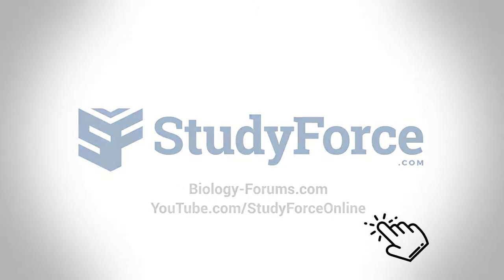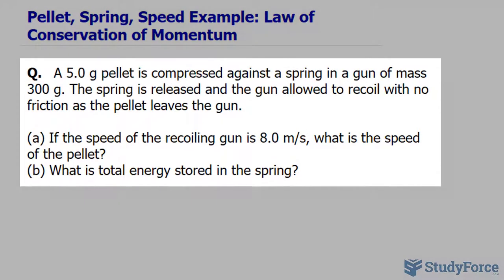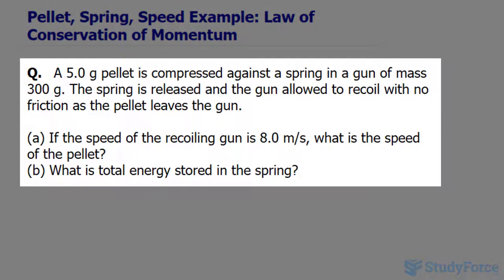In this lesson, we will look at a law of conservation of momentum problem. The question reads, a 5 gram pellet is compressed against a spring in a gun of mass 300 grams. The spring is released and the gun is allowed to recoil with no friction as the pellet leaves the gun.